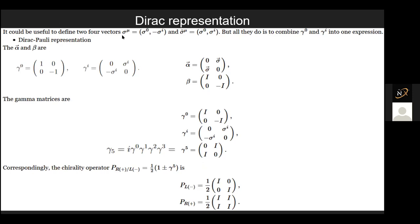He would start by defining two four-vectors — sigma covariant and contravariant. All they do is basically combine gamma matrices into one expression. The gamma matrices are matrices formed using the value of beta. Beta would be gamma-0, and the alpha vectors that you saw here would be gamma-i or gamma-j.